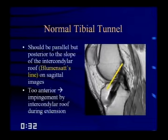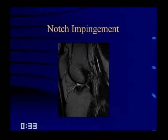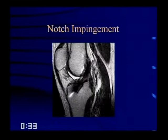The normal tibial tunnel should be parallel but posterior to the slope of the intercondylar roof — the Blumensaat line. If the tunnel is too anterior and crosses the Blumensaat line or its extension, you might get roof impingement or notch impingement. Here are two examples showing increased signal within the ACL graft where the graft slope crosses the Blumensaat line — both patients are prone to notch impingement.